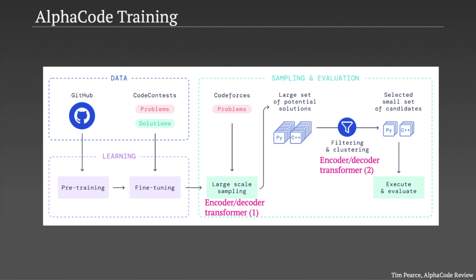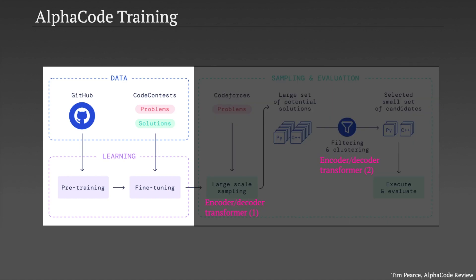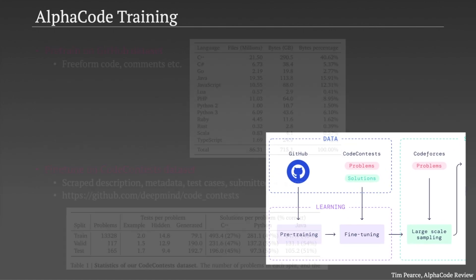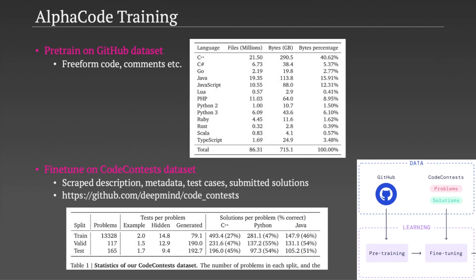There are two transformer models that need training. AlphaCode uses the pre-training fine-tuning process that's pretty standard across deep learning today. There are two datasets. The first is a snapshot of public GitHub repositories comprised of various programming languages. This is absolutely massive. 715 gigabytes of code is a crazy amount of code. And so this is used in a pre-training phase, where it's hoped that the transformer learns some very general things like code structure and syntax.